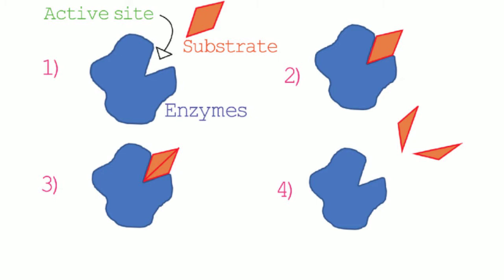The enzyme catalyzes processes in four stages. The first stage is where the enzyme is free to catalyze a reaction. The second stage is where the substrate fits into the active site of the enzyme and attaches itself to the enzyme. The third stage is where the reaction takes place, and the final stage is where the new products are released and the enzyme is free to catalyze another reaction.